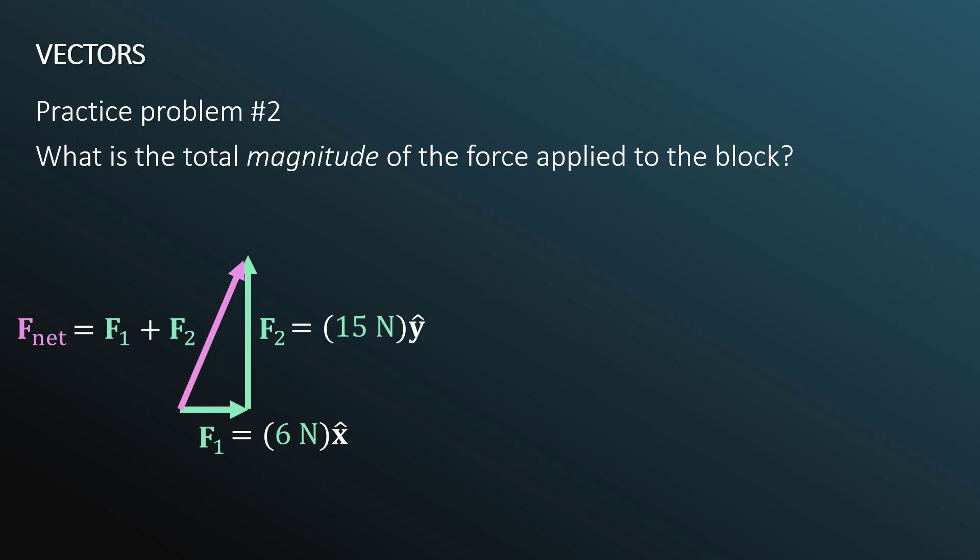We rearrange our vectors. We add them pictorially. We have f1 in the rightward direction, f2 in the upper direction, and fnet connecting the two vectors. But how do we find the magnitude of the net force? If you'll notice, this is a triangle. And what kind of triangle is it? It's a right triangle, where f1 and f2 are 90 degrees relative to each other. So we can simply apply the Pythagorean theorem to get the magnitude. The magnitude of a vector is simply the length of that arrow in the units that we are using.